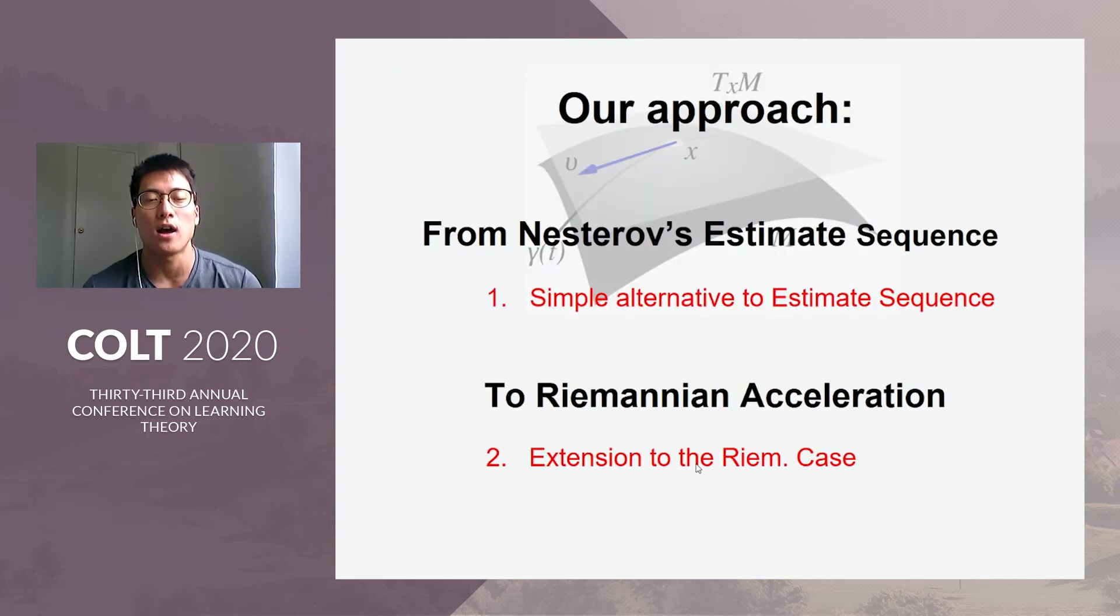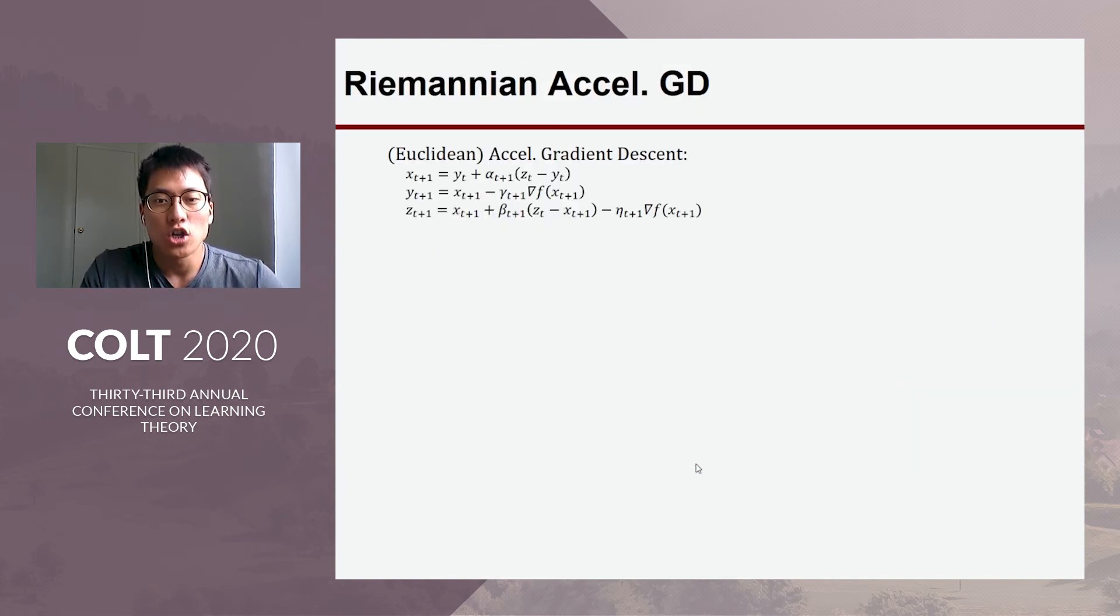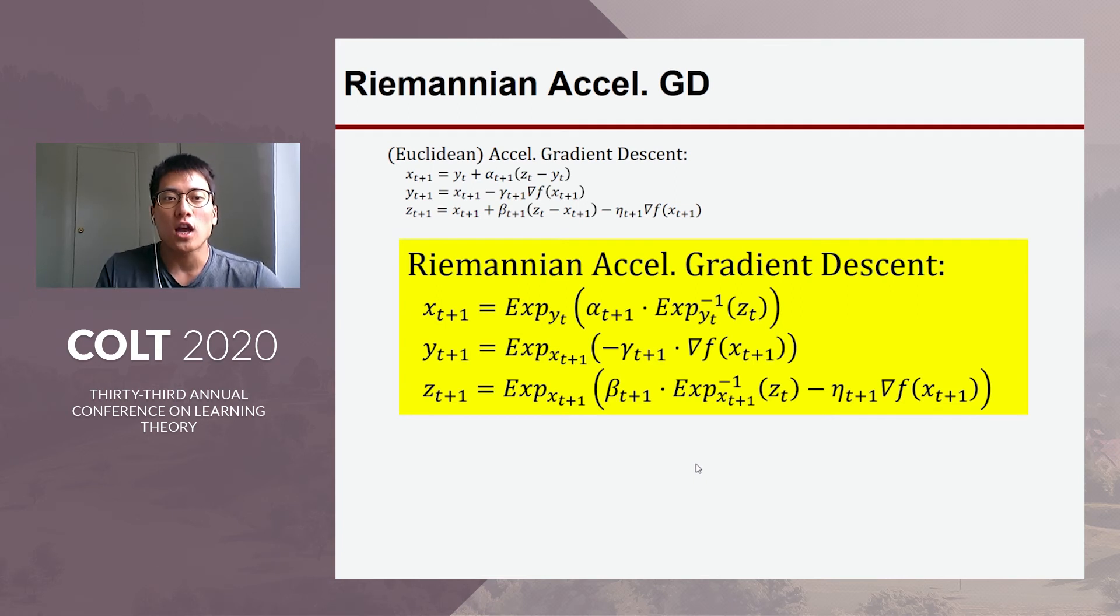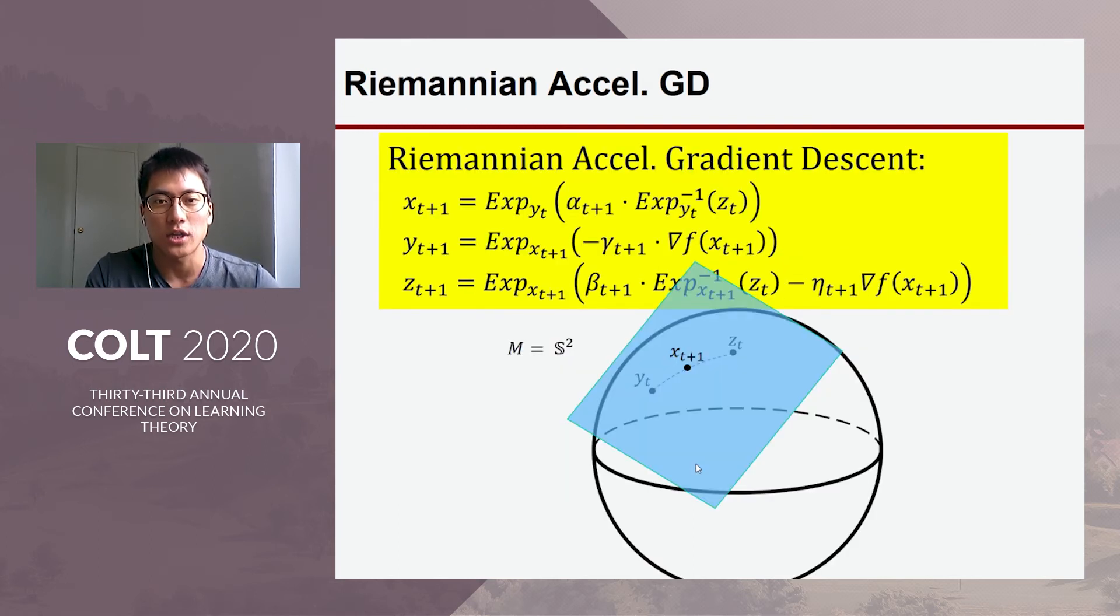Okay, so far we have come up with a simple alternative to Nesterov's estimate sequence. Now, we generalize this to Riemannian case and come up with the first globally accelerated gradient method for Riemannian manifold. So, actually using the exponential map operation on the manifold, one can write the analog of accelerated gradient method for Riemannian case. So, for those who are not familiar with exponential map, what it does is at each step, it computes the vector on the tangent space of the point and maps it back to the manifold using the exponential map.